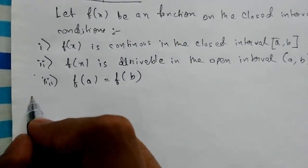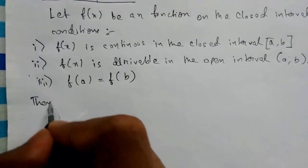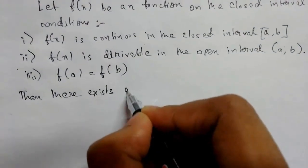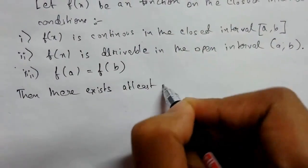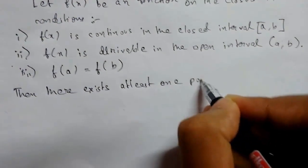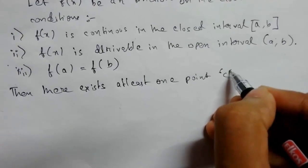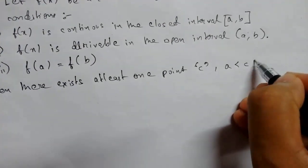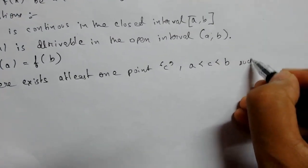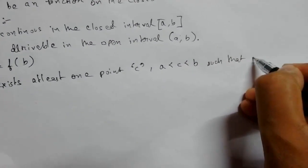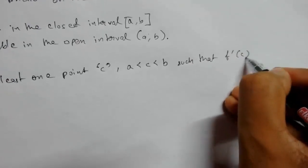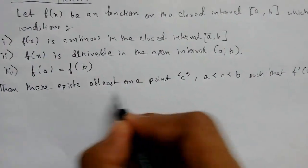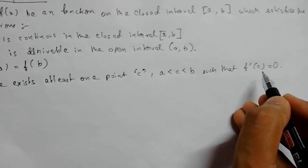Then there exists at least one point c, a less than c less than b, such that f'(c) will be zero. This is our main final conclusion that we get from Rolle's Theorem.